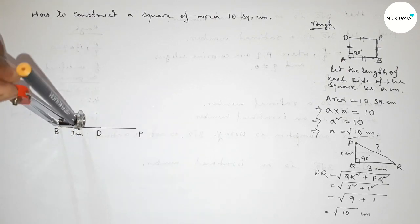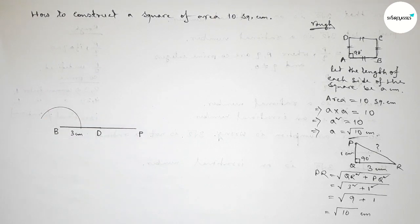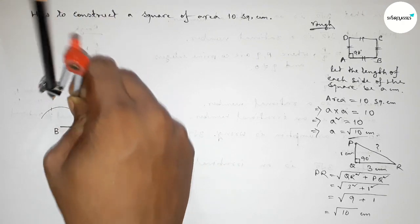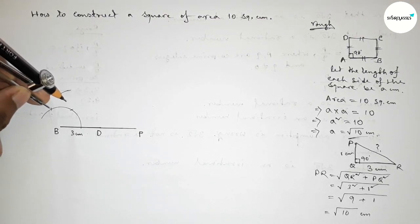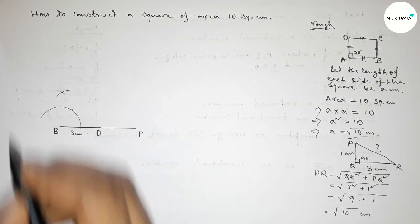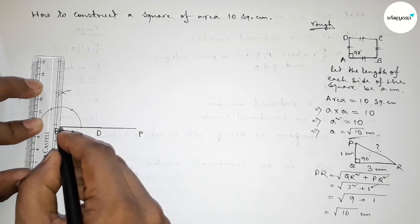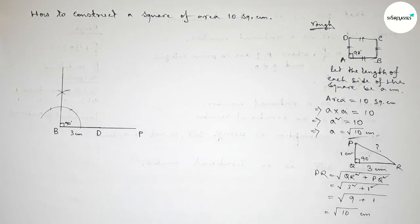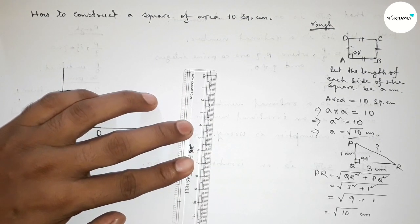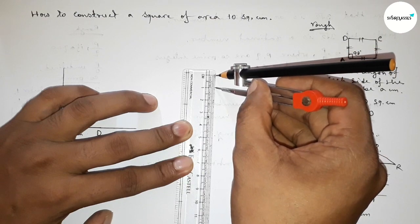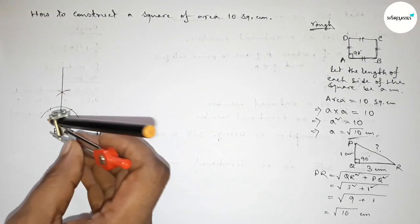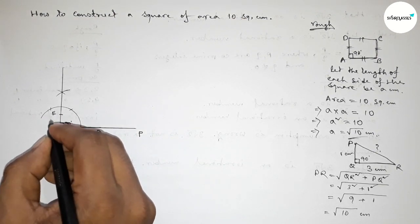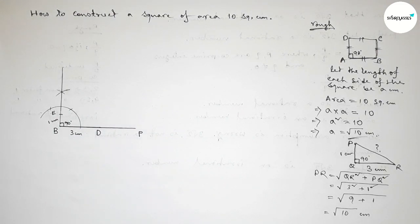We construct a 90-degree angle at point B. Taking any length, drawing an arc, then placing the compass at the same points and cutting arcs — both curves intersect at a point — and joining this line gives a 90-degree angle at B. Now taking 1 centimeter length with the compass, placing it on point B, and cutting to get point E, so BE equals 1 centimeter.